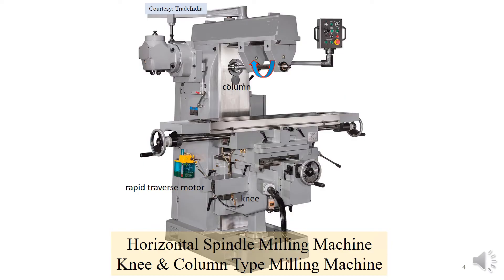This is a knee-and-column type milling machine, and also a horizontal spindle milling machine. This is the arbor of the milling machine on which the cutter is mounted, and this shows the rotation of the arbor. The axis of the spindle or arbor is horizontal, so this is called a horizontal milling machine. This structure is the column. On the column the knee is mounted, and on the knee the table is mounted.